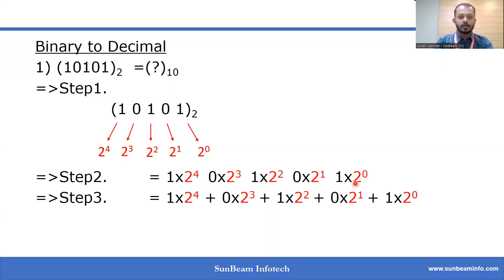In the third step, we add all these products. After adding, we get the answer 21, which is the equivalent of binary 10101 in decimal number system.